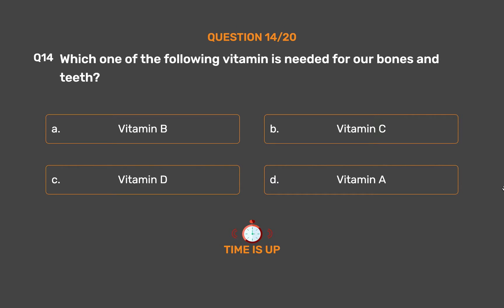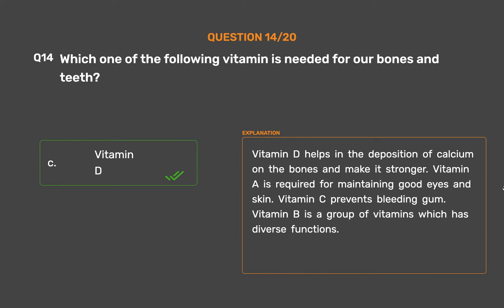The correct answer is Option C - Vitamin D. Vitamin D helps in the deposition of calcium on the bones and makes them stronger. Vitamin A is required for maintaining good eyes and skin. Vitamin C prevents bleeding gums. Vitamin B is a group of vitamins which has diverse functions.